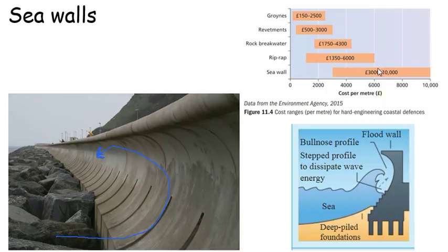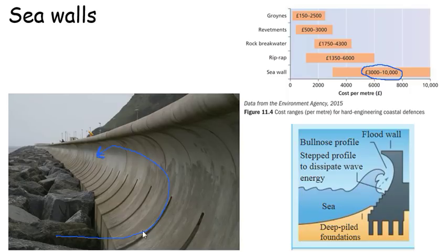Seawalls are the most expensive strategy — between £3,000 and £10,000 per metre. In terms of a cost-benefit analysis, these are very expensive. We can't have miles and miles of seawalls for a whole stretch of coastline within a littoral cell, because we're not going to be able to afford it.